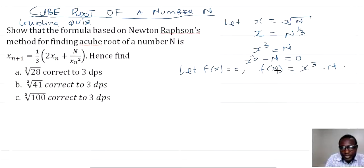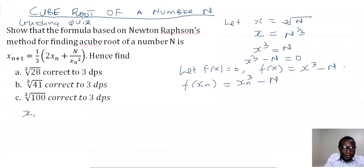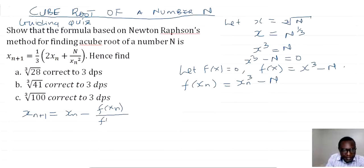From here we can discretize this to get f(xn), where f(xn) = xn³ - N. Based on Newton-Raphson's method — recall the formula — x(n+1) = xn minus f(xn) divided by f'(xn).